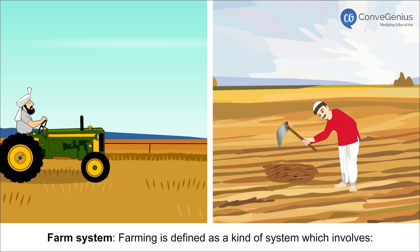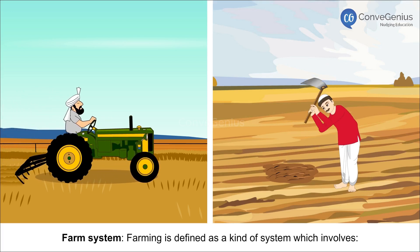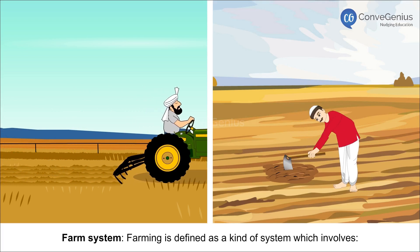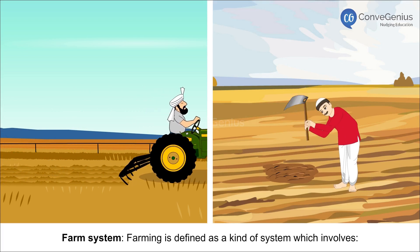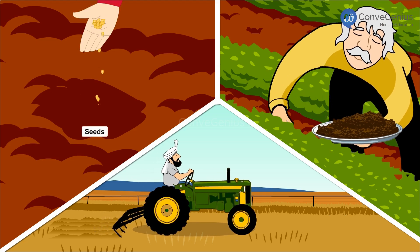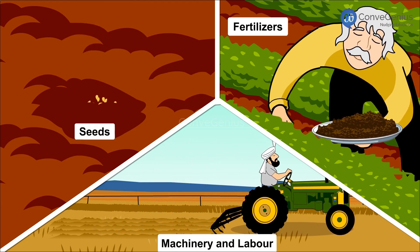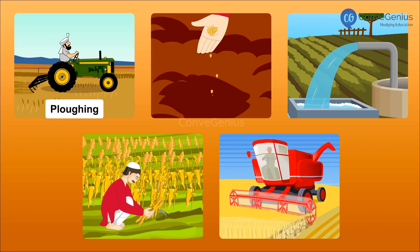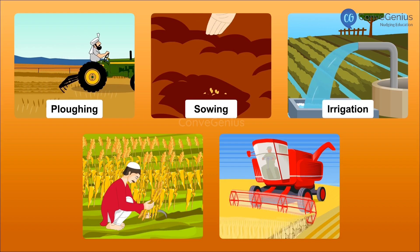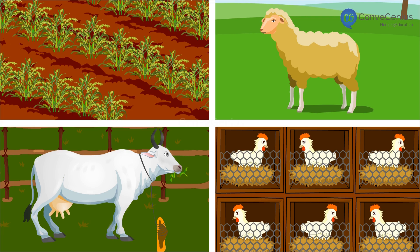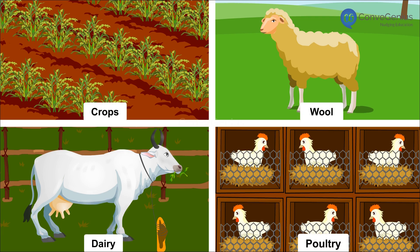Farm System: Farming is defined as a kind of system which involves inputs, operations and outputs. Inputs include seeds, fertilizers, machinery and labour. Operations are ploughing, sowing, irrigation, weeding and harvesting. Outputs are crops, wool, dairy and poultry.